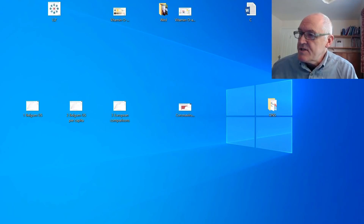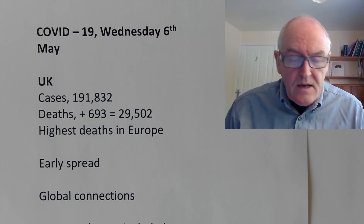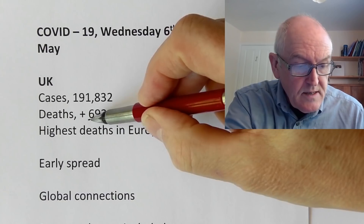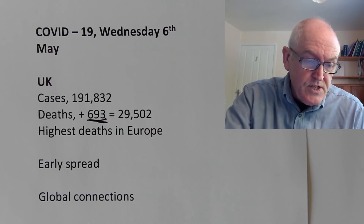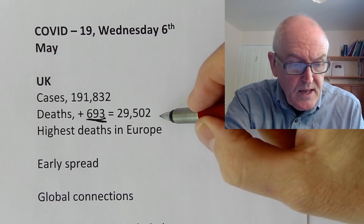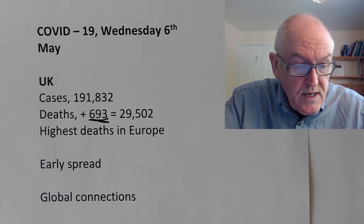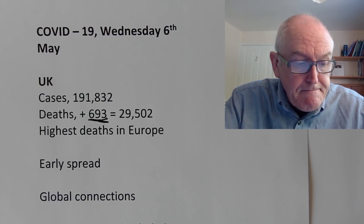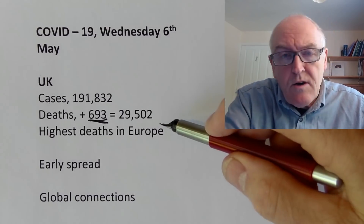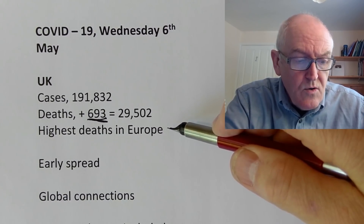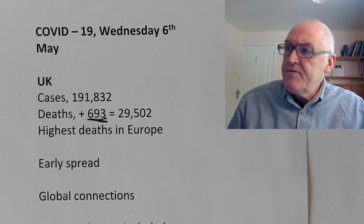Welcome — it is Wednesday the 6th of May. I want to start off with some things from the UK, because the Office for National Statistics has published its usual data. The cases in the UK are of course increasing. Deaths up until Tuesday: now 29,500, and we know it's slightly more than that because of the delay in reporting. This makes the UK the highest death rate in Europe at the moment. UK, Spain, and Italy are now much on a par — unfortunately a very grim par.